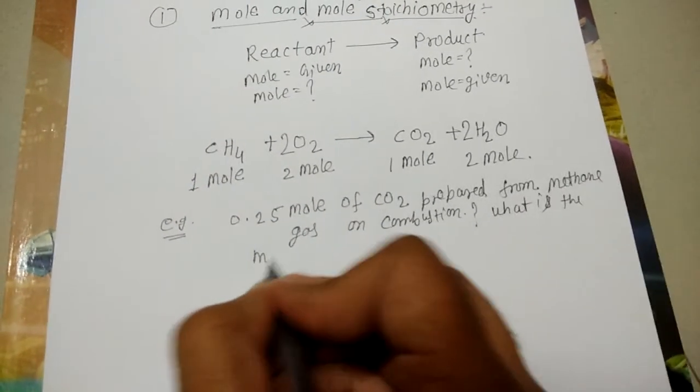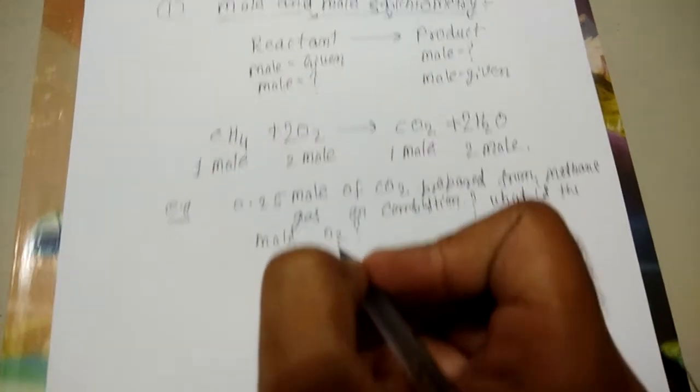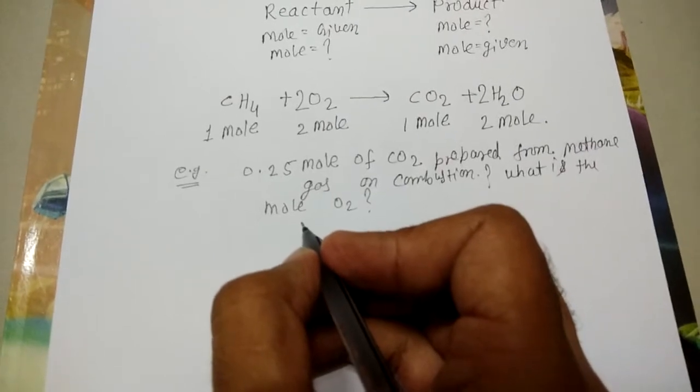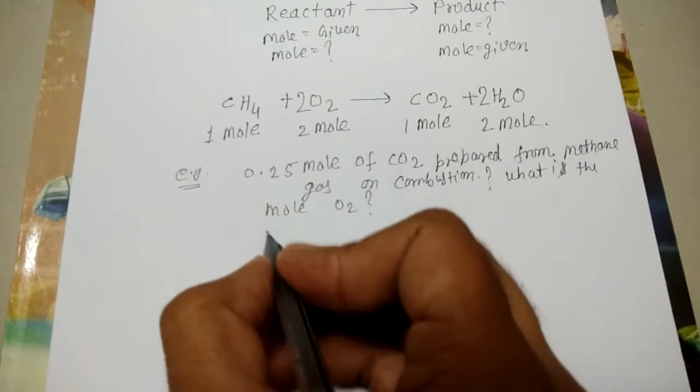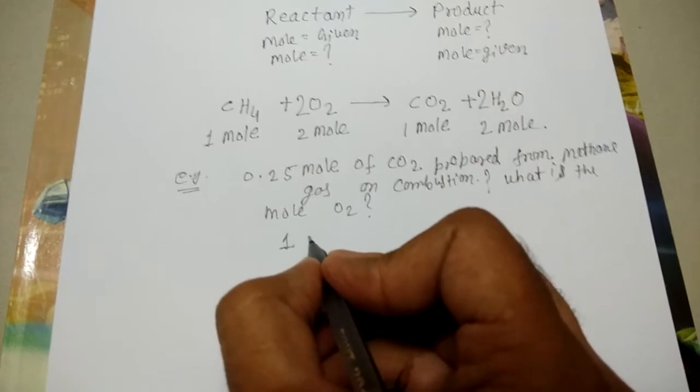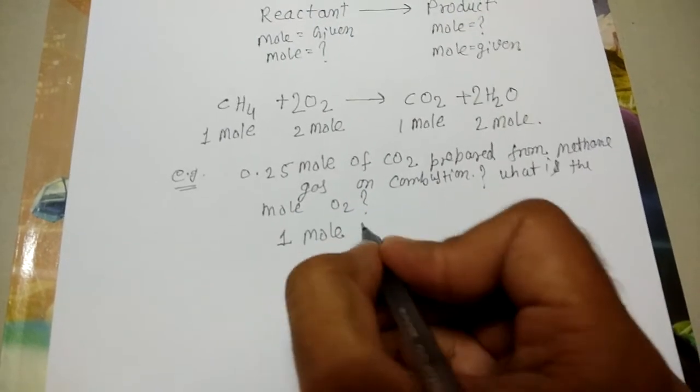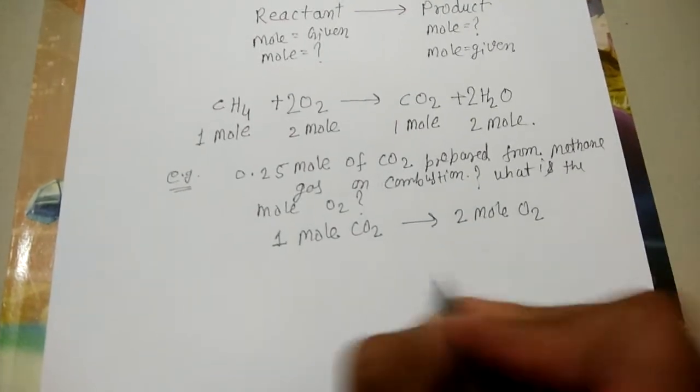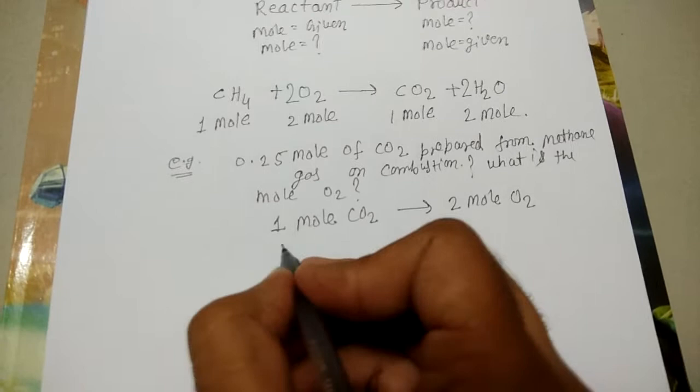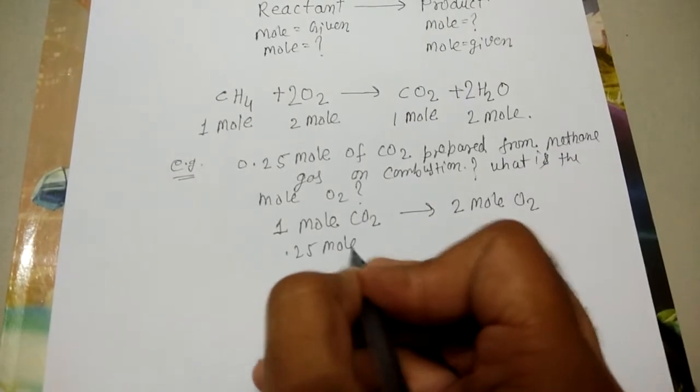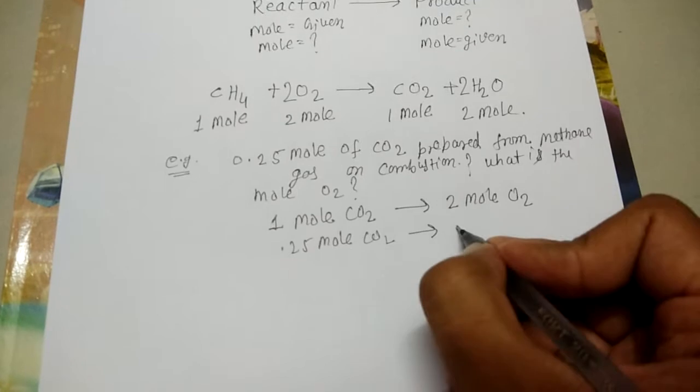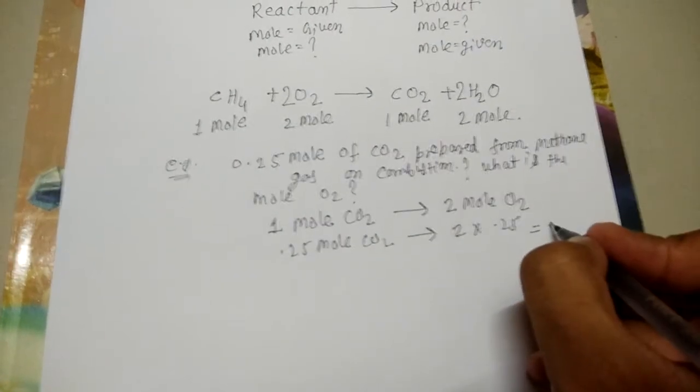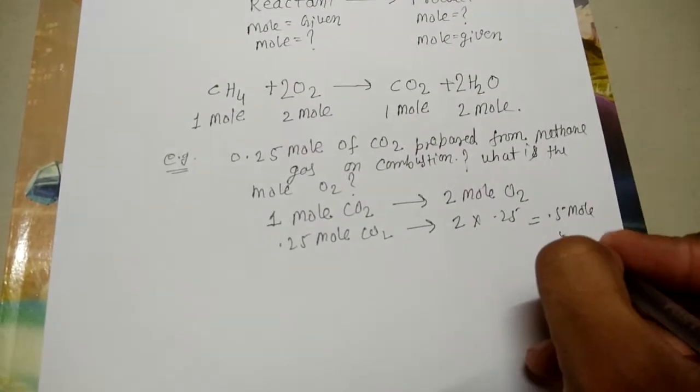Oxygen is in reactant and CO2 is product. You can see that 1 mole of CO2 is prepared from 2 mole of oxygen. Then 0.25 mole of CO2 is prepared from 0.5 mole of oxygen.